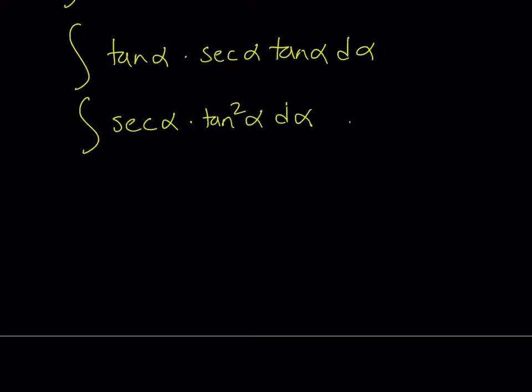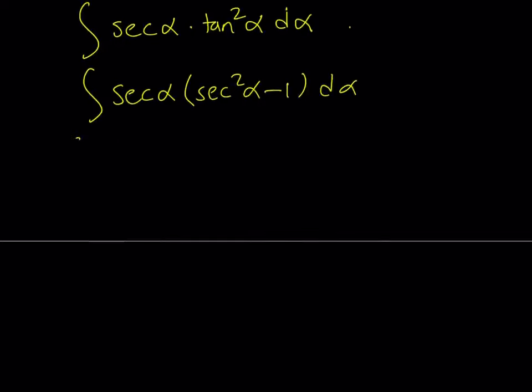So we did get a trigonometric integral. Now we're going to solve this. There is more than one way to do it, but I'd like to turn tangent squared into secant. So let's go ahead and replace tangent squared with secant squared alpha minus 1, and then distribute.